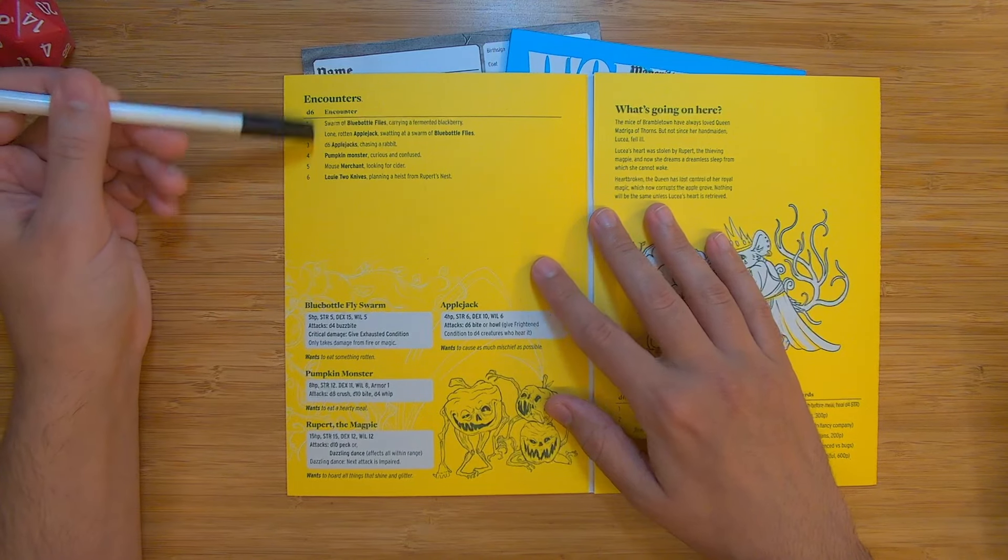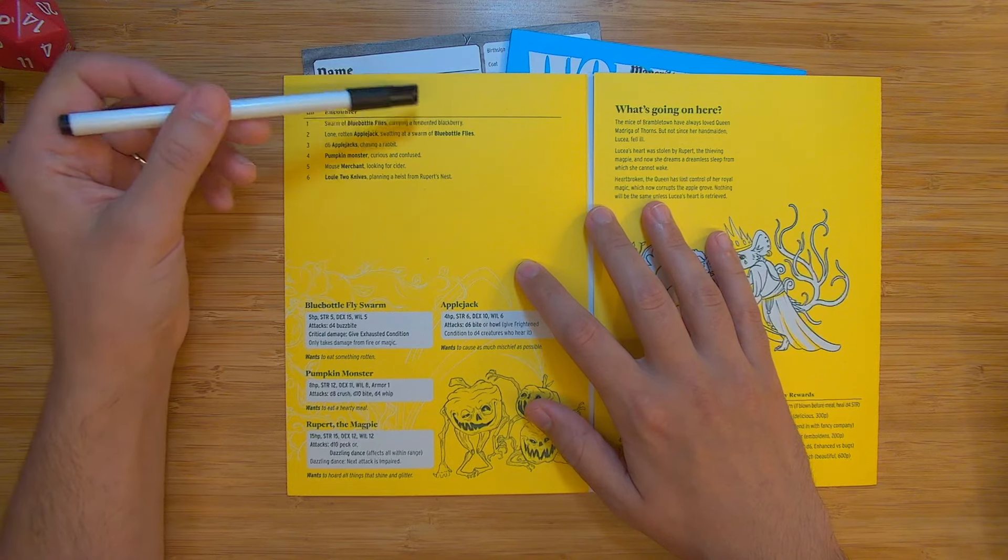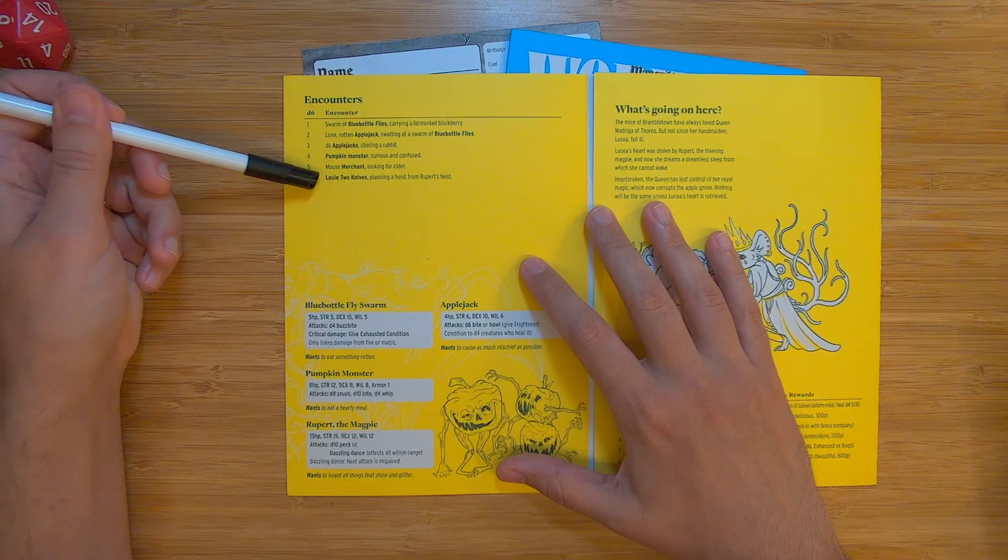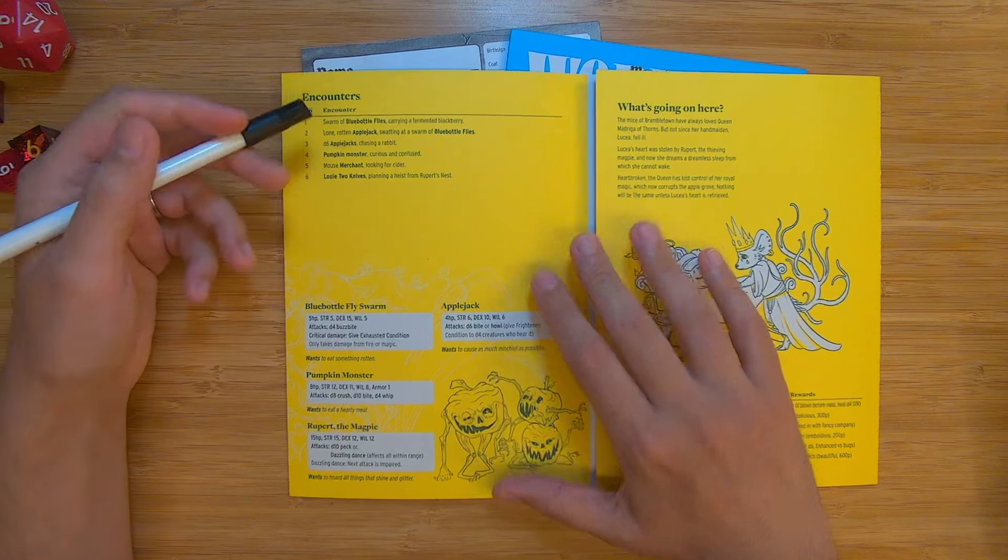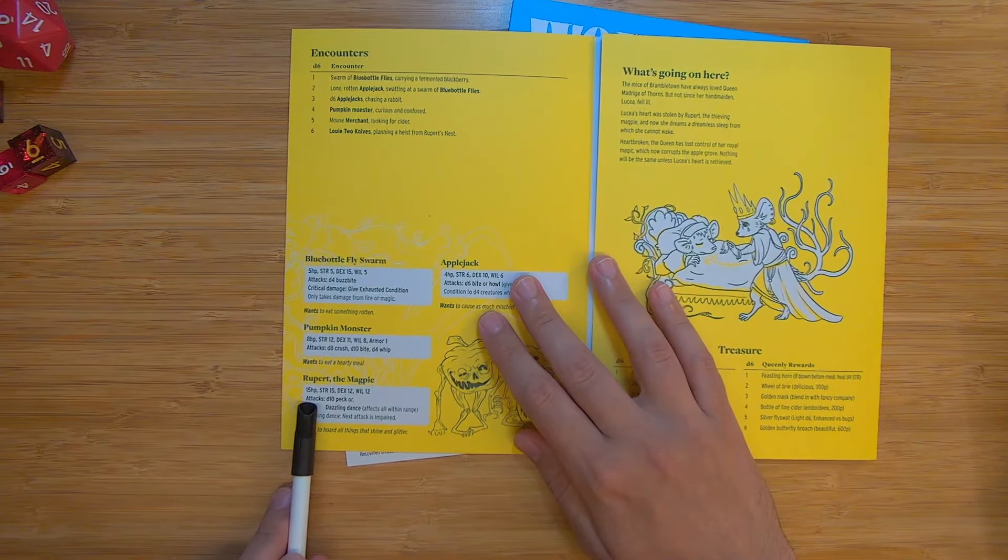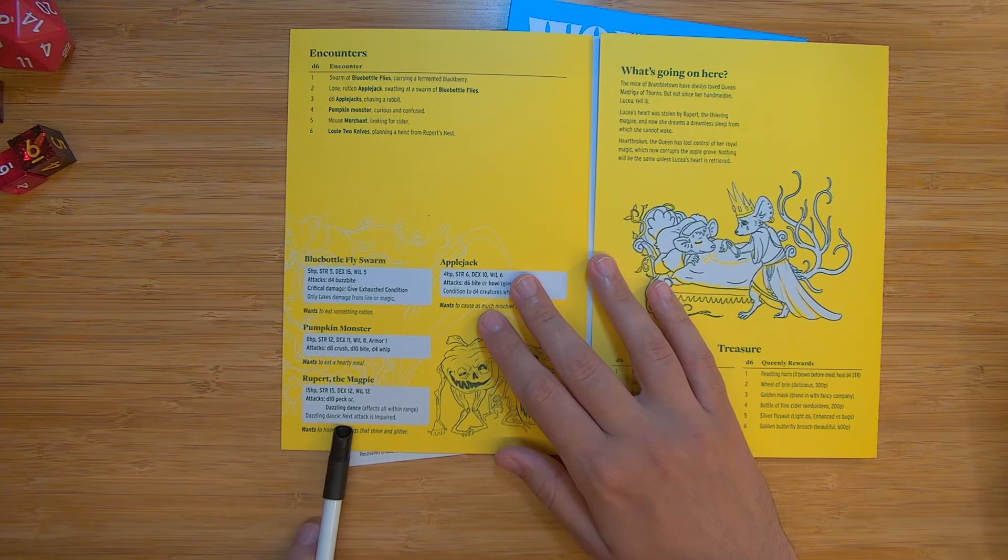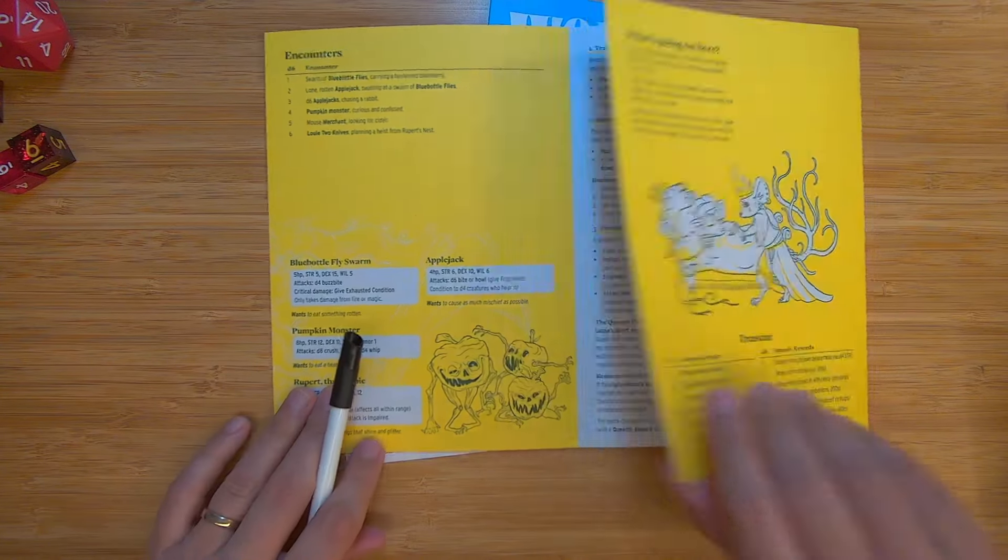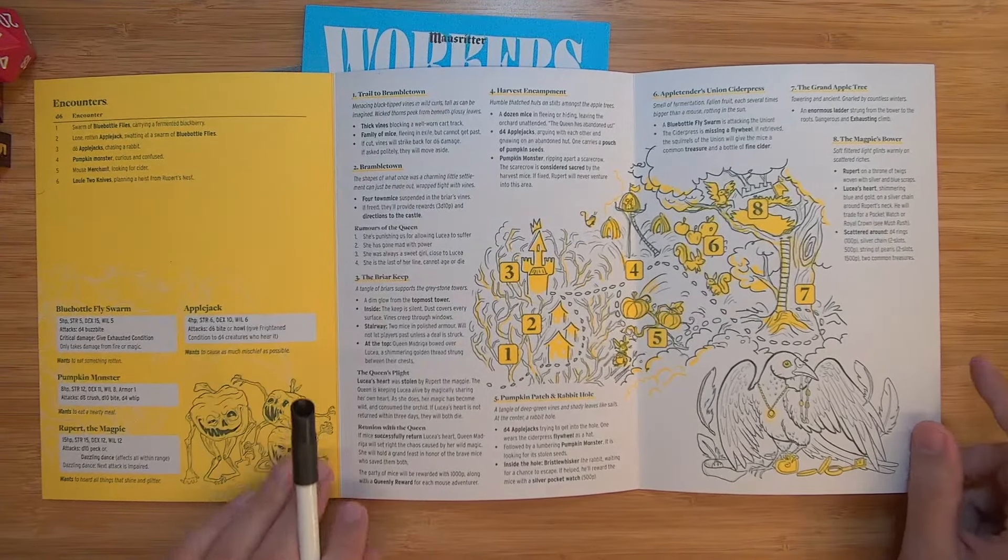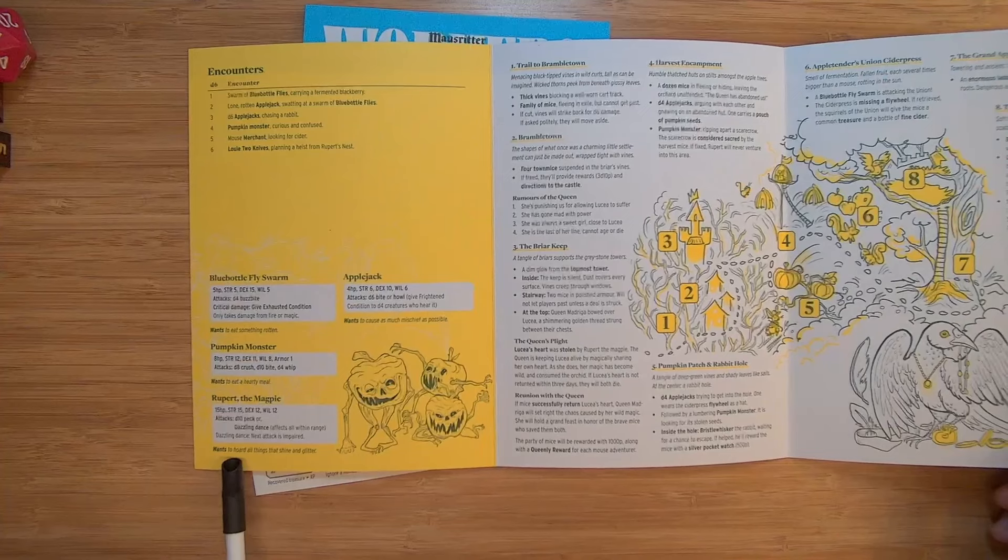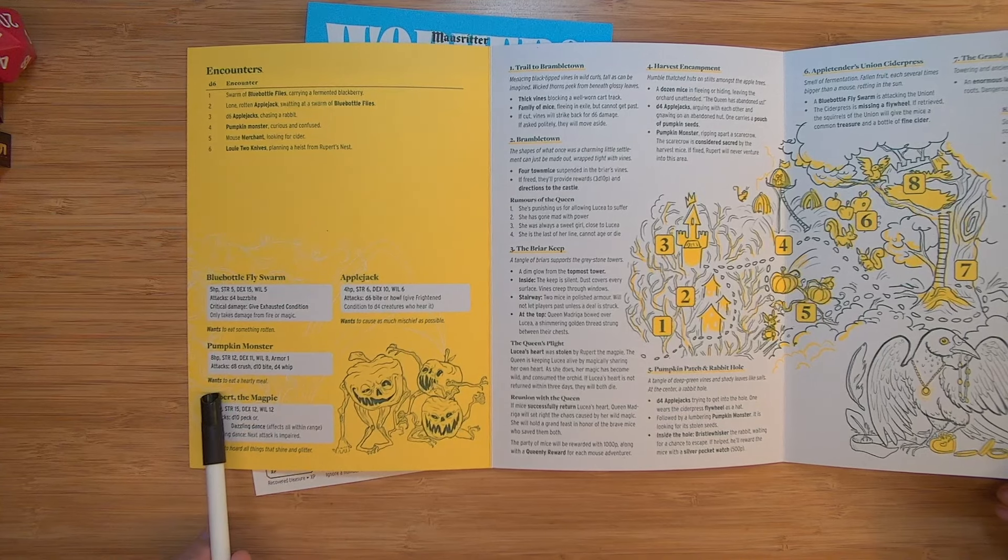So there's a D6 encounter. So every so often you can roll for an encounter. It might be a storm of blue bottle flies, a lone run apple jack, it might be any of these different monsters. And it might be Louis Two Knives planning a heist from Rupert's Nest. So Rupert is the magpie, sort of the end boss for this adventure. But again, Rupert the magpie, 15 hit points, 15 strength, 12 dex, 12 will. Attack is a D10 peck or dazzling dance. Next attack is impaired. So it's the magpie that is wearing like all of these jewels and things. And it hypnotizes you sort of with the dance. But Rupert the magpie has a want. He wants to hoard all things that shine and glitter. So immediately you get a flavor of what this guy's going to do. The pumpkin monsters, they want to eat a hearty meal. The blue bottle fly swarm, they want to eat something rotten. So not everything needs to be combat. If you wanted to figure out what they want, you wanted to roleplay, what are they doing? It looks like there's this swarm of flies that are around there and they're swarming around a big pile of rotten apples. Applejack, they want to cause as much mischief as possible. So I know exactly what these guys are going to be doing.